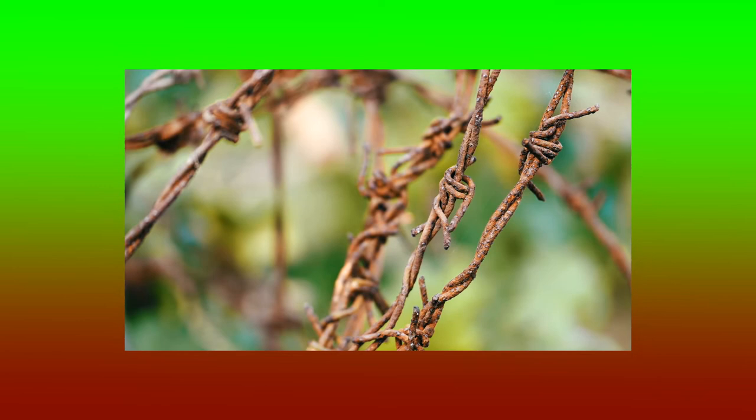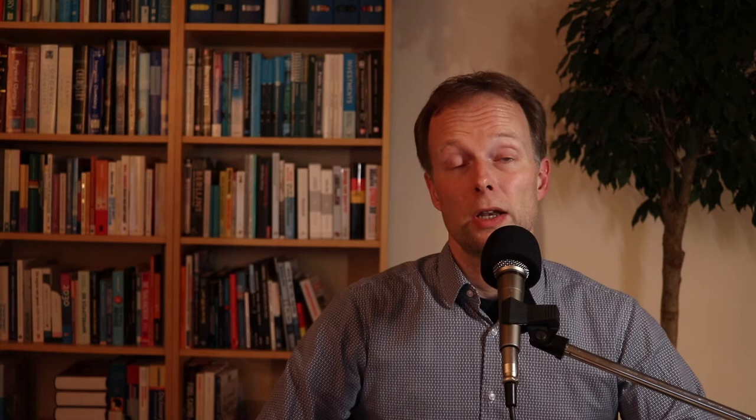At first, kilometers of barbed wire and fences are installed, and in the months that follow, the Berlin Wall becomes a fact. This day that had started at one o'clock in the morning had been prepared already for months and was under the direction of Erich Honecker, the later leader of East Germany.